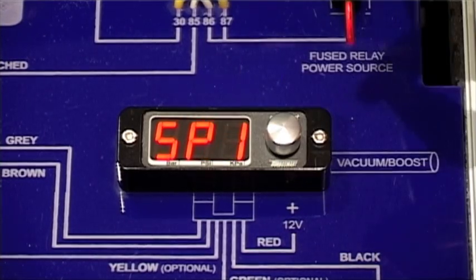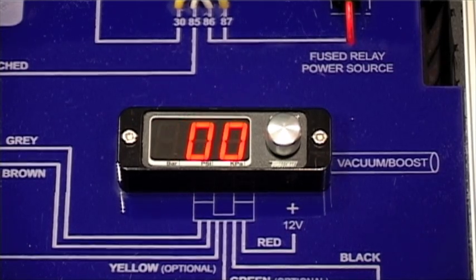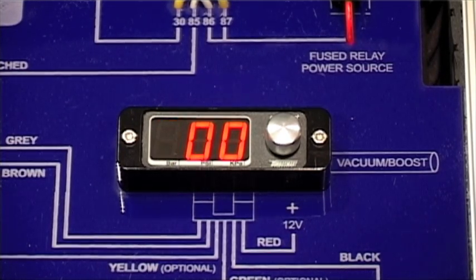Start off by setting up your SP value. The SP value is not a target boost pressure, but a value in which the solenoid will cycle at.